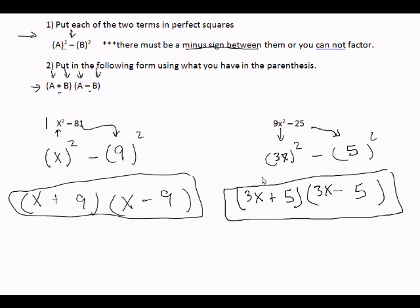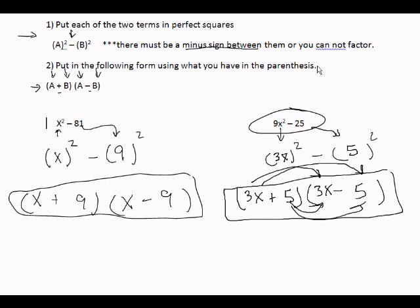If you FOIL these two — if you multiply these two — you will get right back to where you started from: the middle terms will cancel out and you will get 9x squared minus 25. So my answer is (3x + 5)(3x − 5).